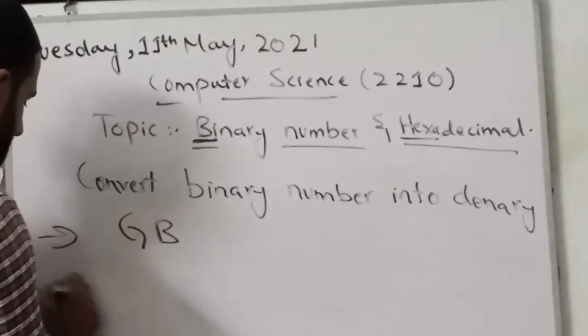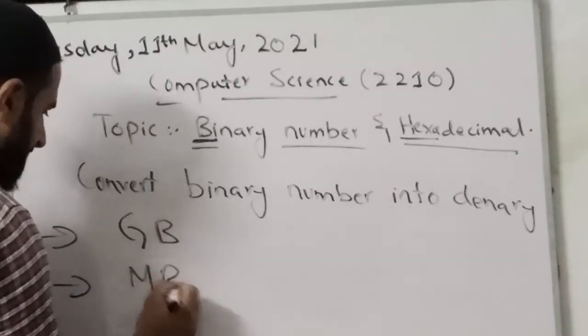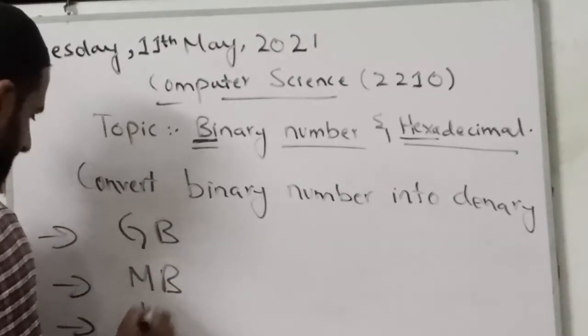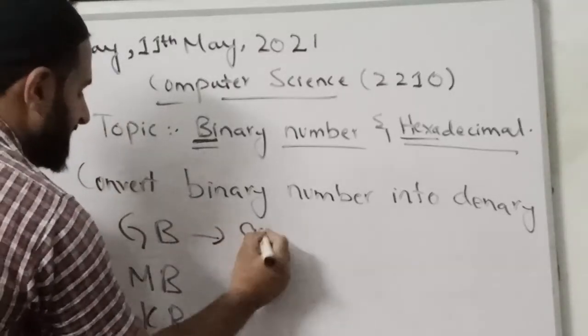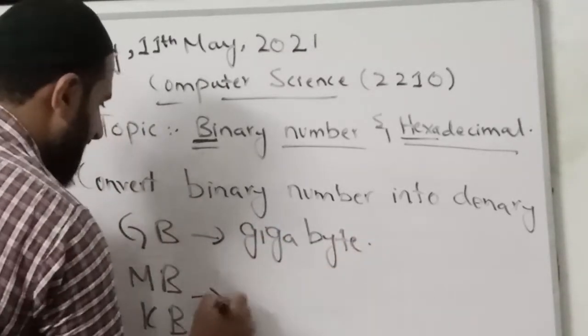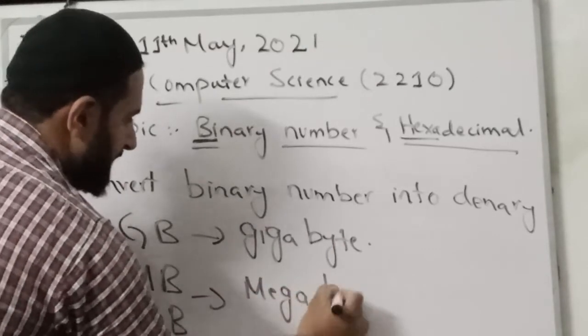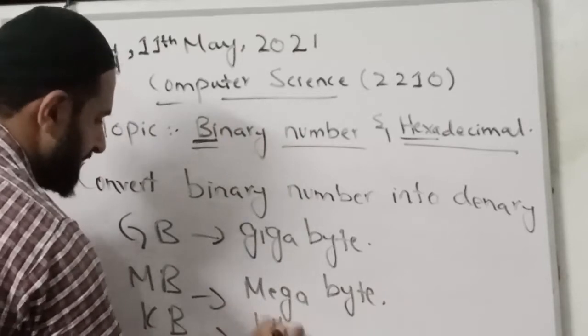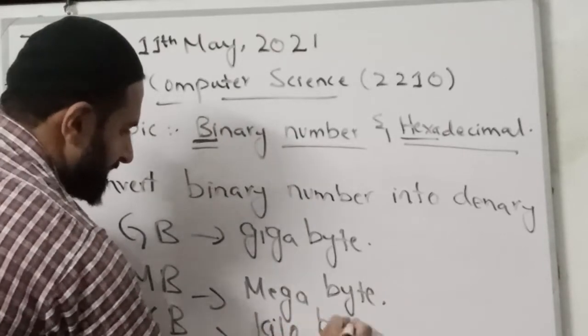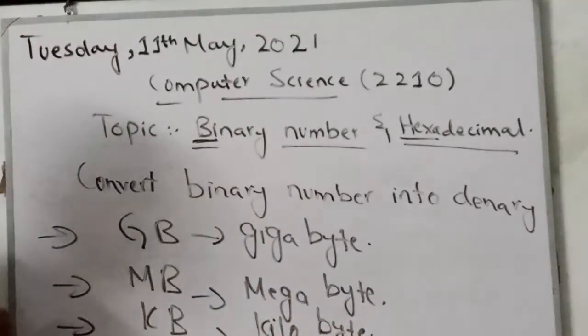So what does GB stand for? GB, MB, KB. GB stands for gigabyte, M stands for megabyte, and K stands for kilobyte.